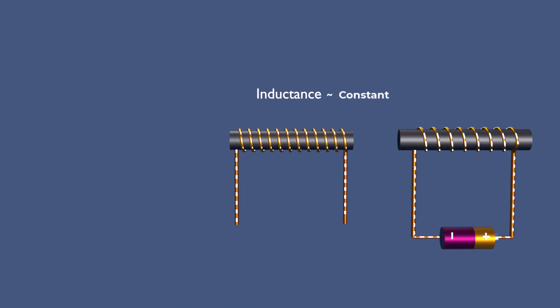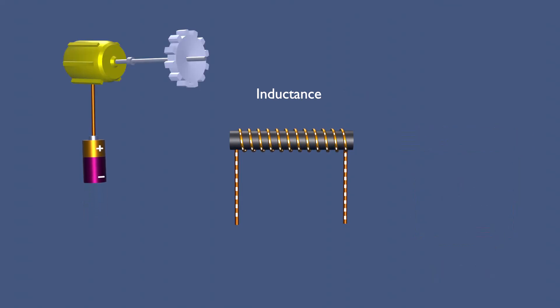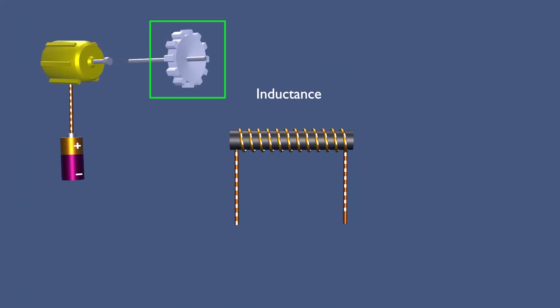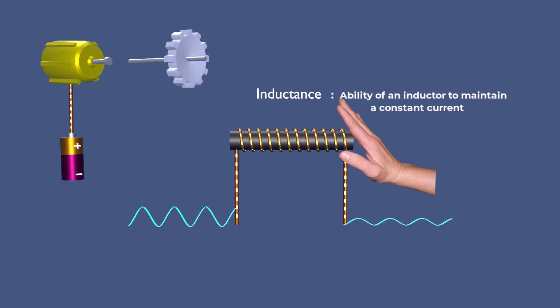It remains constant regardless of whether the current is AC or DC. This property is analogous to inertia in mechanical systems, where it resists any change in the motion of an object. For example, a flywheel continues rotating even after the driving force is removed due to inertia. Similarly, an inductor resists changes in current by generating a back EMF that opposes sudden variations, ensuring a smoother flow of current.